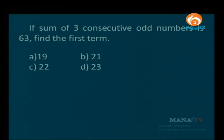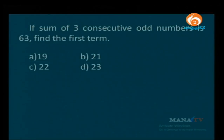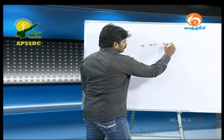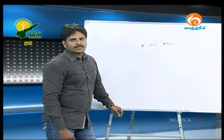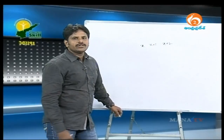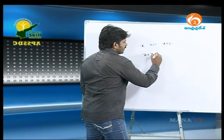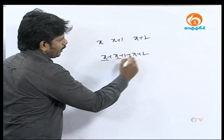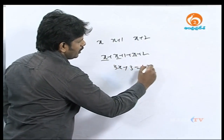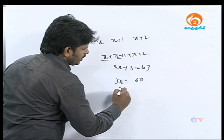Next problem: if the sum of 3 consecutive odd numbers is 63, find the first term. For consecutive odd numbers, the assumption is: first odd number = x, second = x+2, third = x+4. Adding: x + (x+2) + (x+4) equals 3x plus 6 equals 63, so 3x equals 57, and x equals 19.